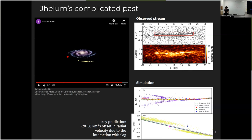So although Jhelum is this very interesting stream full of gaps and kinks and broad components, we can see that all these complexities can be done with just the interaction with a single massive satellite.